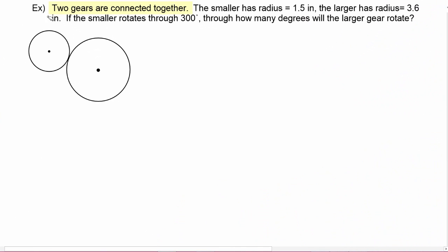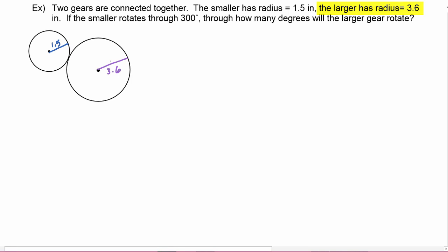In this next example we're told that two gears are connected together. The smaller has a radius equal to 1.5 inches — let's go ahead and put that in our picture — and the larger has a radius of 3.6 inches. So we know the radius of the smaller is 1.5 inches and the radius of the bigger is 3.6 inches.